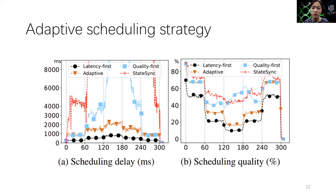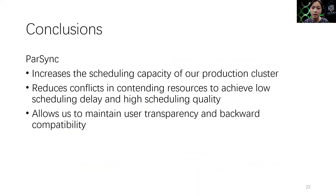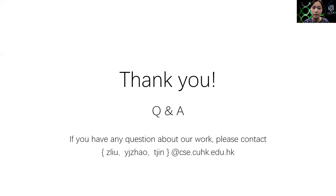We also have a detailed comparison of scheduling throughput, scheduling delay, the number of conflicts, and the scheduling quality on all the strategies mentioned in the high-fidelity simulation in the paper. To summarize, partition synchronization increases the scheduling capability of our production cluster to 40,000 tasks per second on 100,000 machines. It reduces conflicts in contending for resources to achieve low scheduling delay and high scheduling quality. It also allows us to maintain user transparency and backward compatibility that are essential to our production clusters.